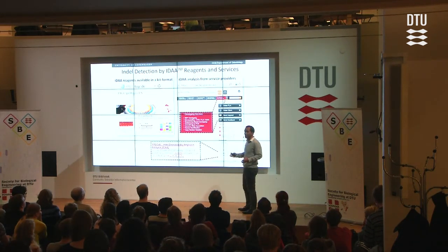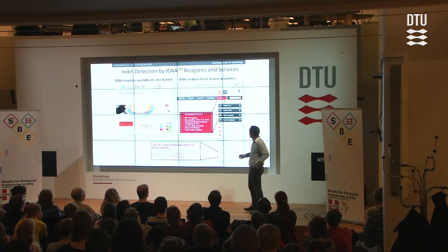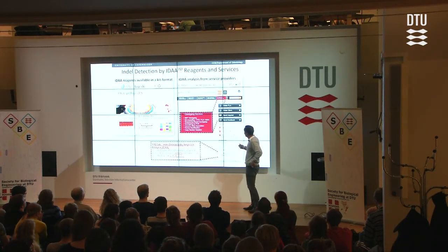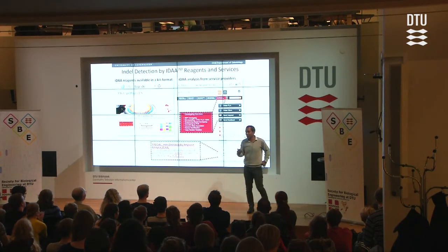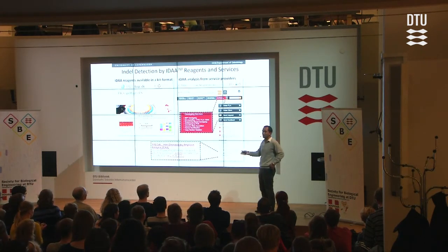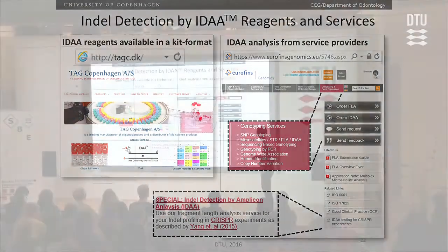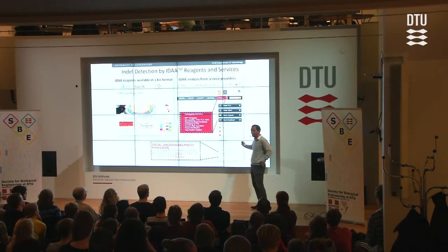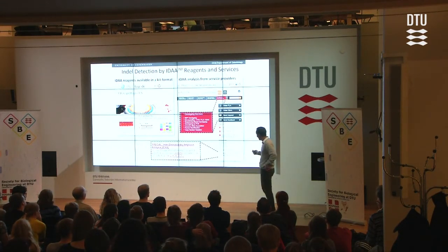We also asked whether the guide RNA failure is cell-line dependent — maybe it doesn't work in one cell line but would work in another. We tested three different cell lines and showed that if a guide doesn't work in one cell line, it will not work in any cell line, at least in a mammalian system. The take-home message: IDASA is extremely simple — basically a PCR, then capillary electrophoresis fragment analysis detected by a sequencer. Within six hours you can have a full spectrum of what's going on after your genome editing experiment.